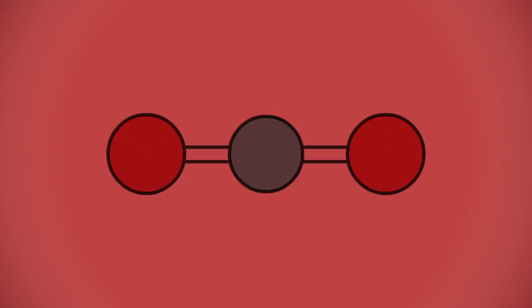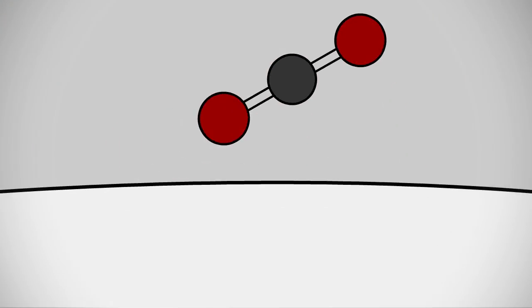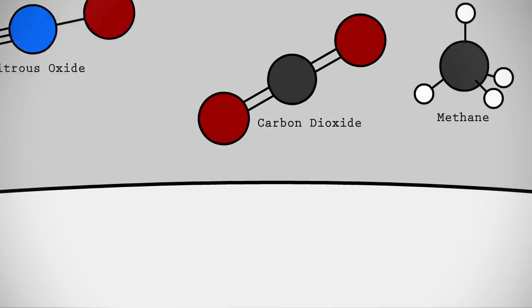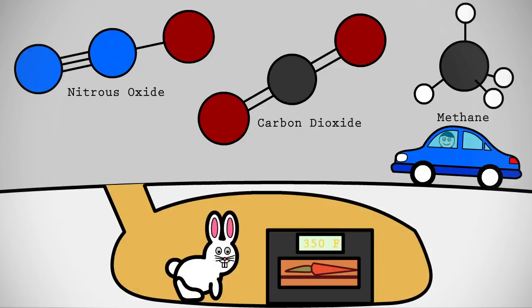Though a future video will look at the exact mechanism in detail, heat is absorbed by the molecules as infrared radiation, which causes them to vibrate back and forth. The biggest culprits that humans directly add to the atmosphere include carbon dioxide, methane, and nitrous oxide, the bulk of which are produced from burning fossil fuels for electricity and transportation.